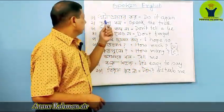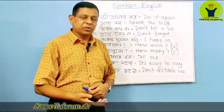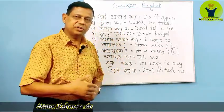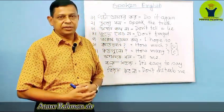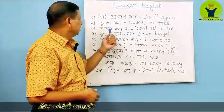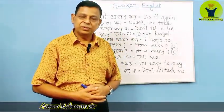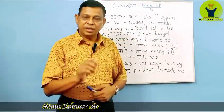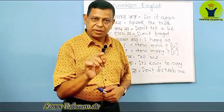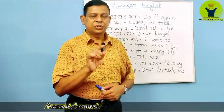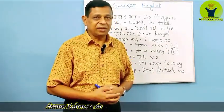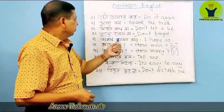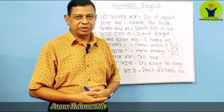Let's see one by one. First sentence: 'It abar koro' — Do it again. Then 'Shat balo' — Speak the truth. And 'Myttha boluna' — Don't tell a lie, or never tell a lie. For speaking the truth, say 'Speak the truth,' and for not lying, say 'Never tell a lie' or 'Don't tell a lie.' Then 'Don't forget' or 'Never forget.'